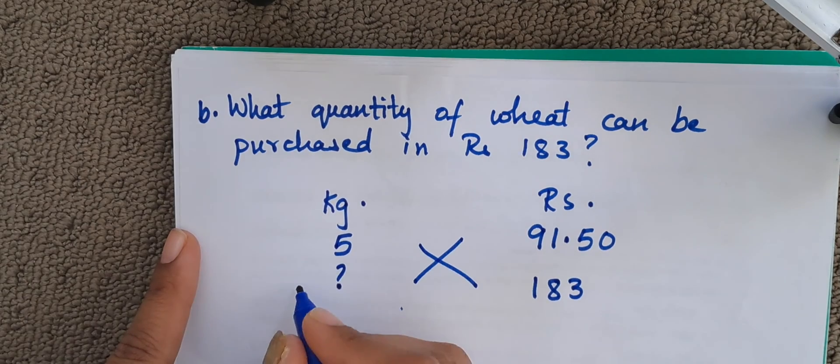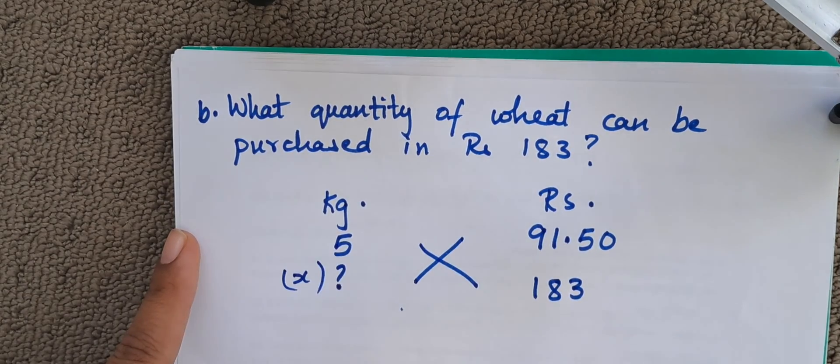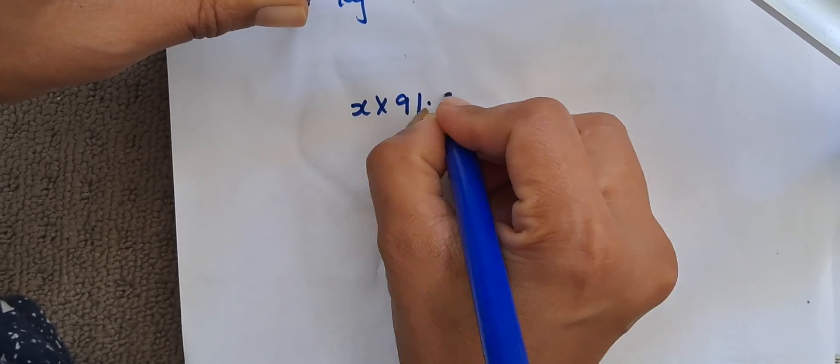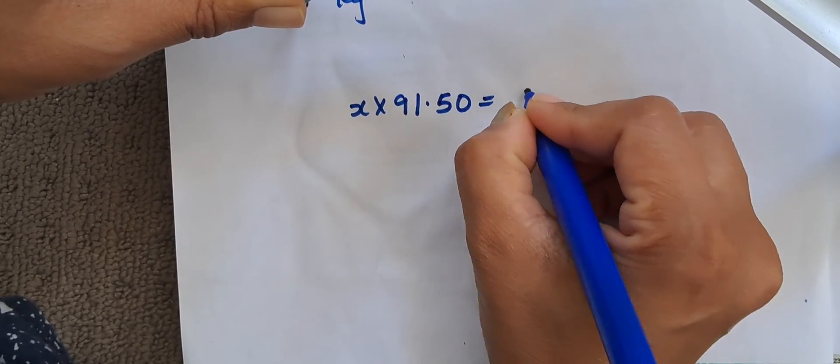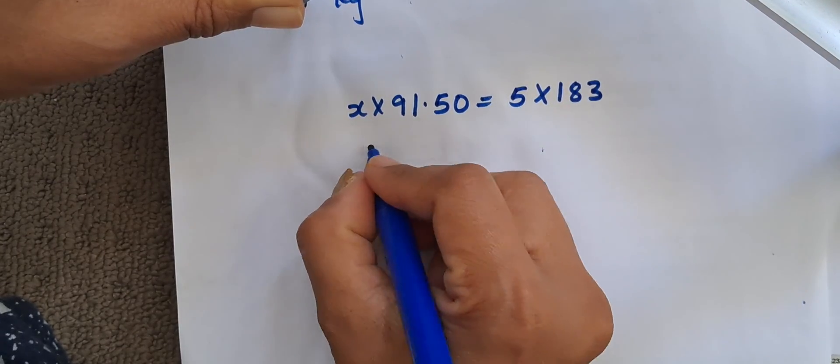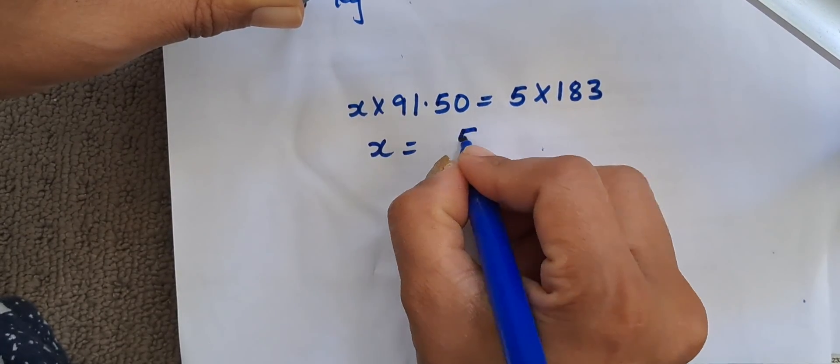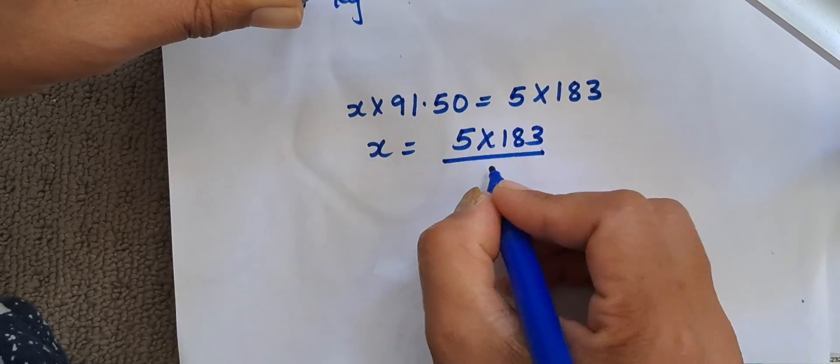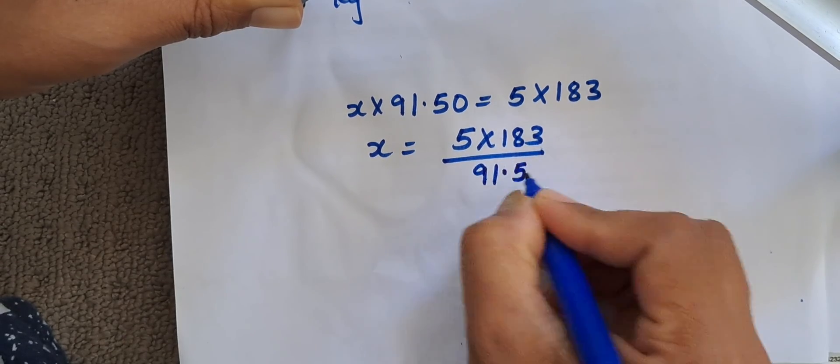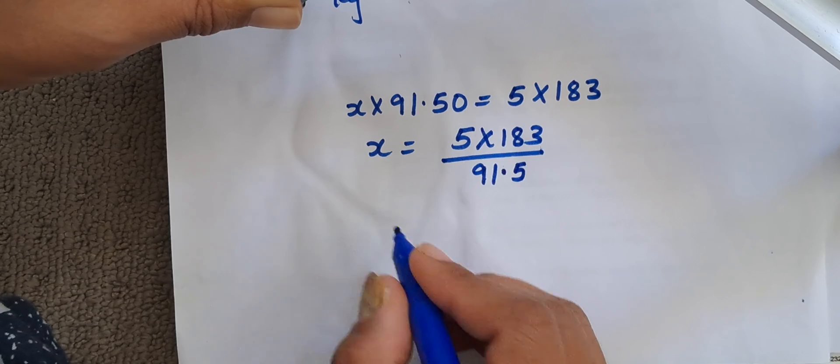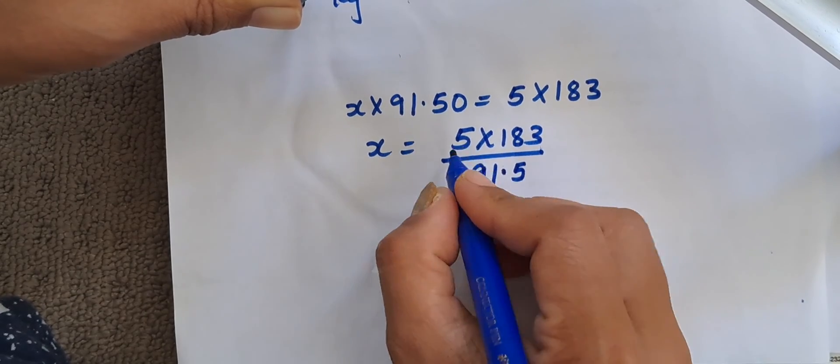Let us cross multiply again. Let us take this as x. So we can write it as x into 91.50 is equal to 5 into 183. So x is equal to 5 into 183 divided by 91.5. 91.50, I am going to write it as only 91.5. So we start simplifying.